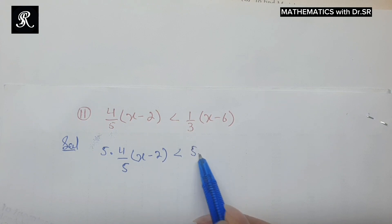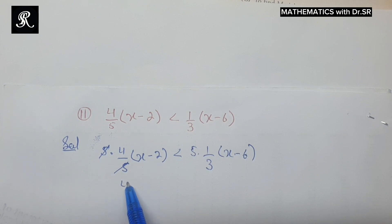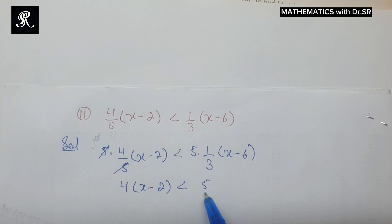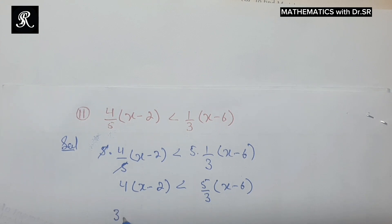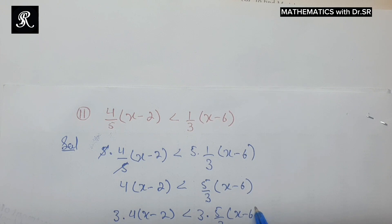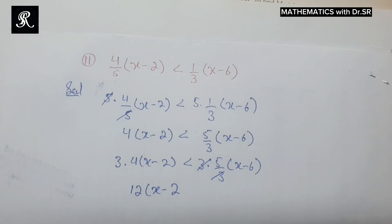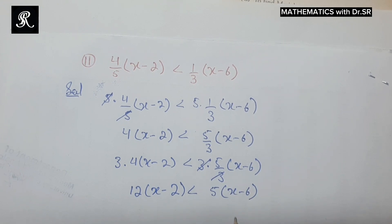First of all, we will multiply throughout the inequality by 5. The 5 will cancel out and we will be left with 4 times (x minus 2). Then we have 5 over 3 times (x minus 6). Now we need to get rid of this 3, so we multiply both sides of the inequality by 3. The 3 cancels out and we are left with 12(x minus 2) less than 5(x minus 6).